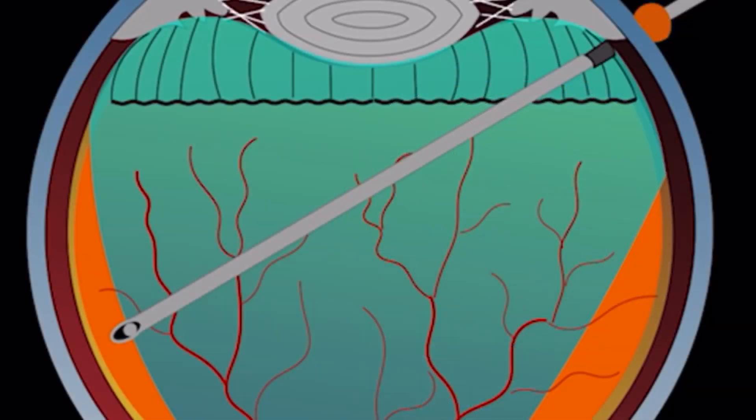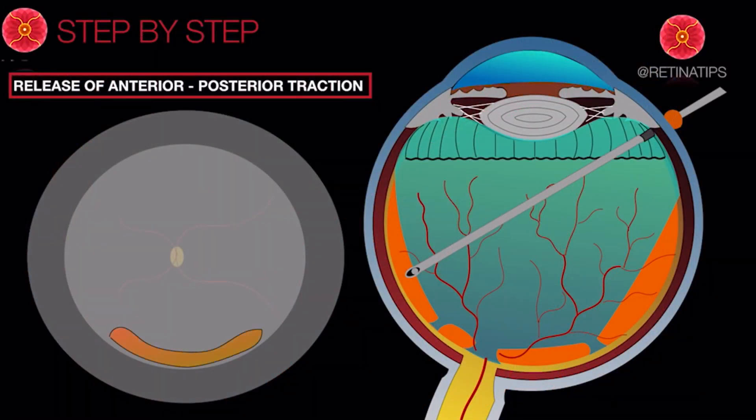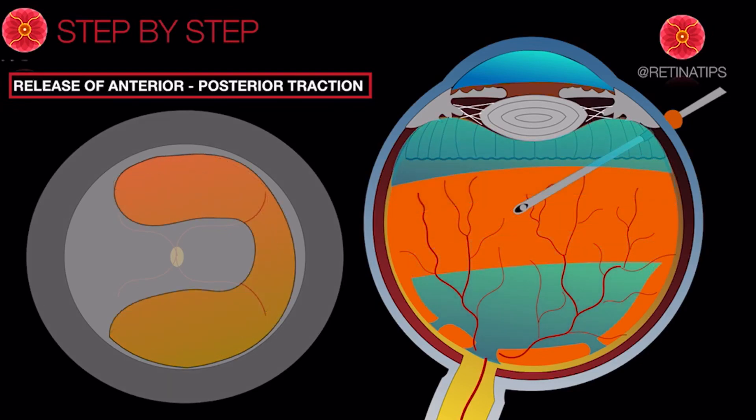Starting in a place where the posterior hyaloid is detached in the midperiphery, perform a circumferential rexis trying to remove as much as possible of the vitreous detached from the retina.